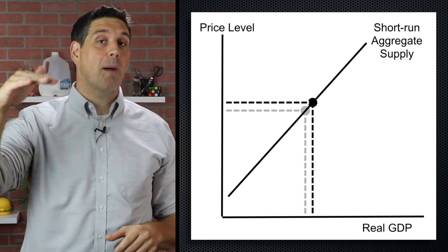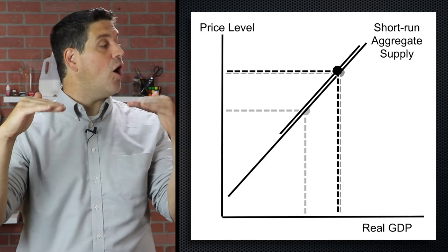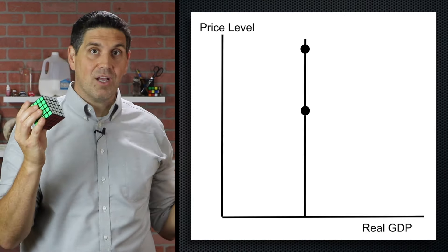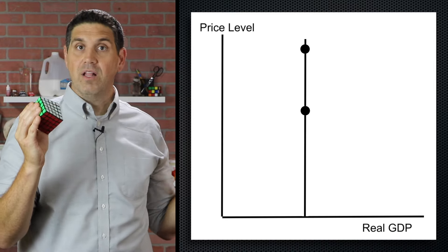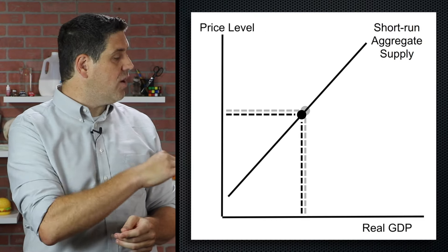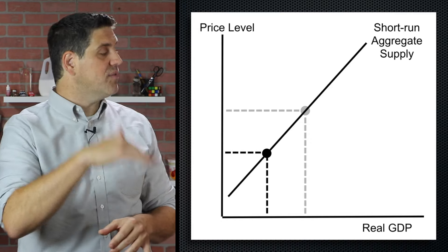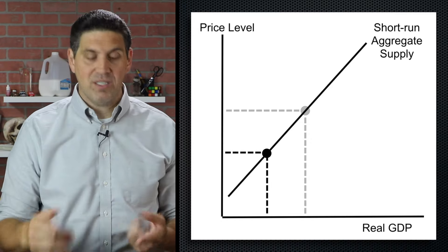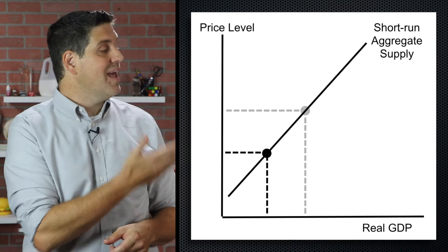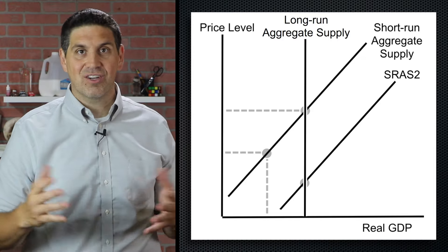So when the price level went up, producers produce more output in the short run. But eventually, wages and resource prices also go up, so we end up in the long run. When you connect these two dots, you get a second curve — the long run aggregate supply — and it goes the other direction as well. When price level falls, producers produce less output. But because price level has fallen, people expect lower prices, so the price of contracts and wages will fall, the price of resources would fall, lowering the cost of production and causing the short run supply curve to shift to the right, putting us at the long run aggregate supply curve.